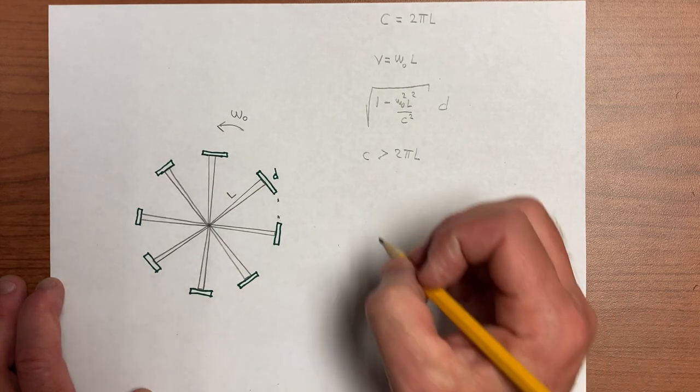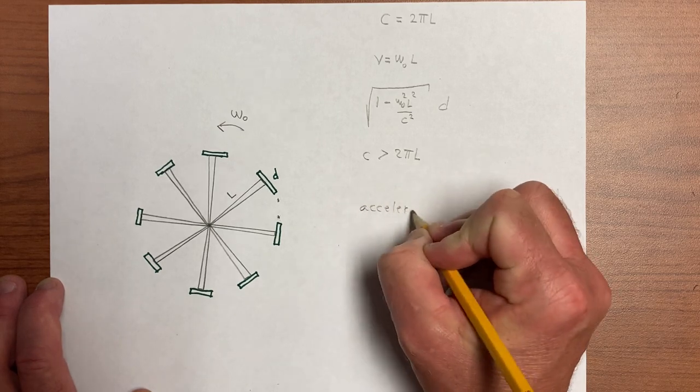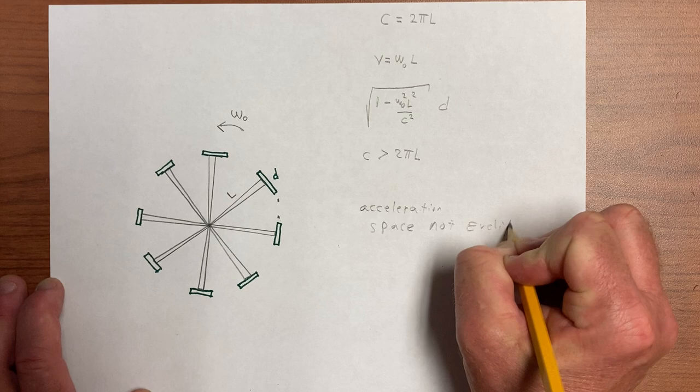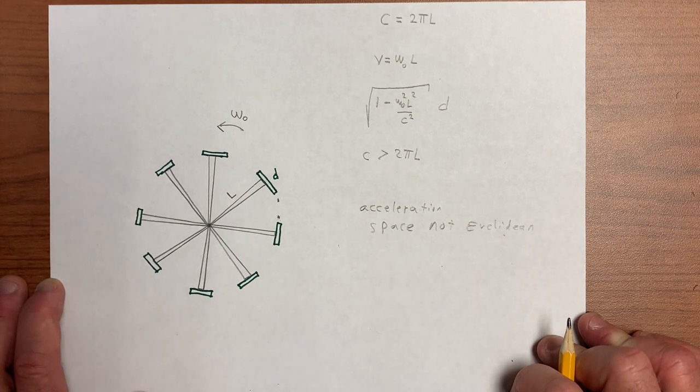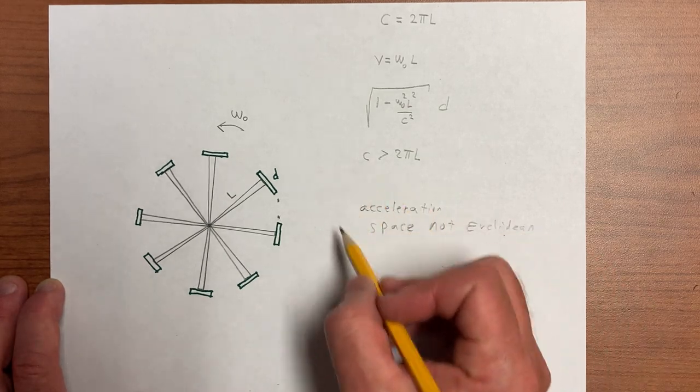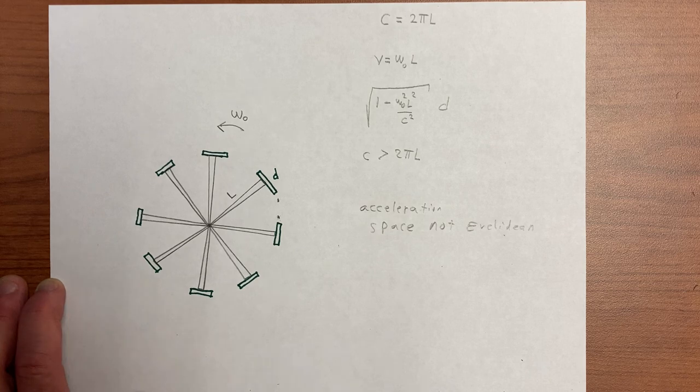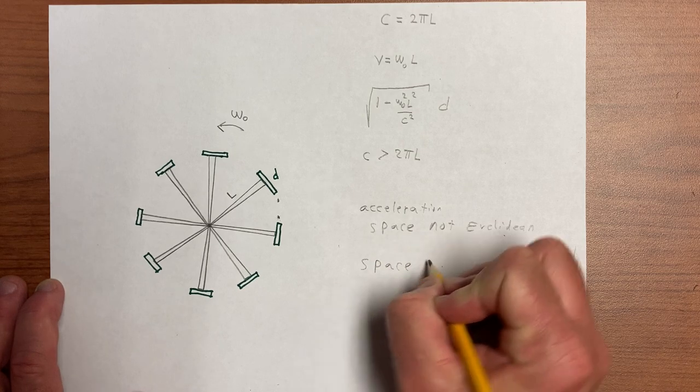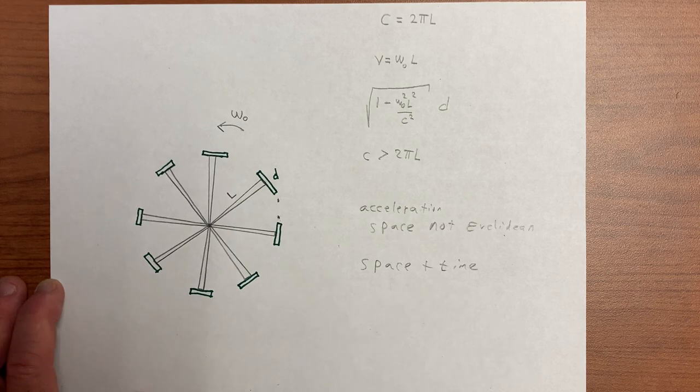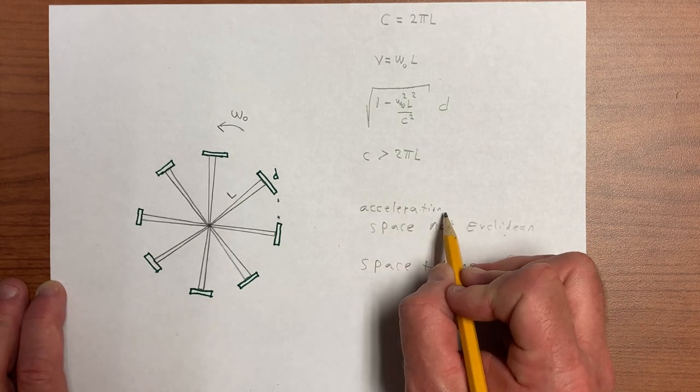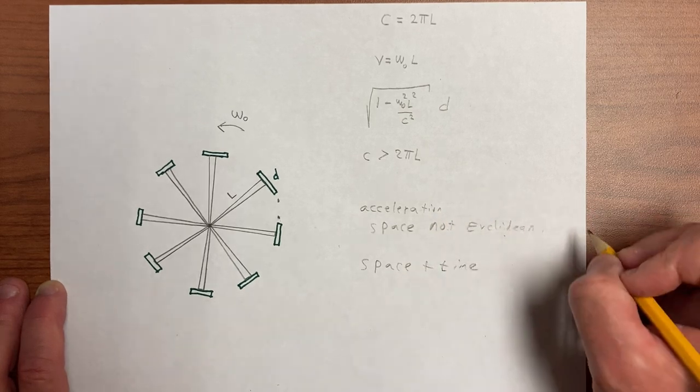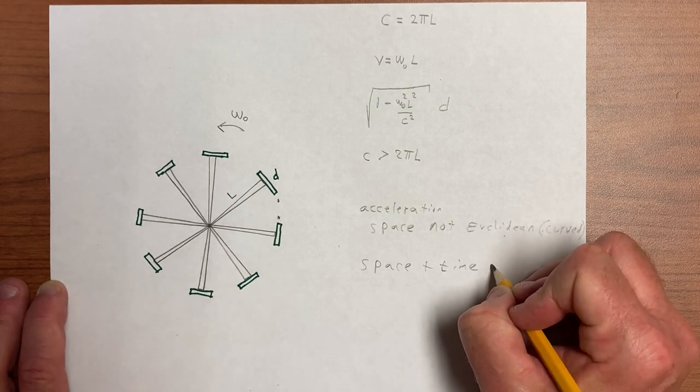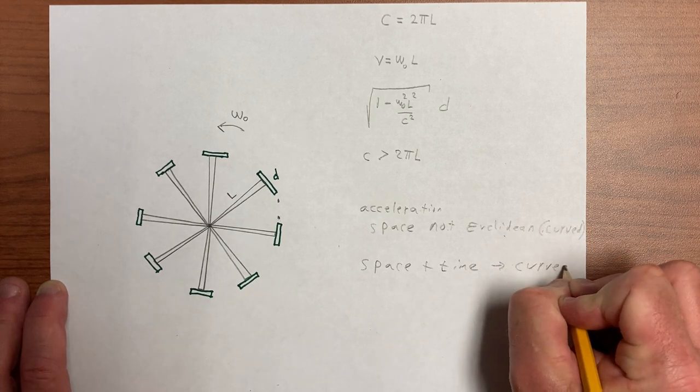Space is not Euclidean. So when we have acceleration, we seem to be concluding that space is not Euclidean, and so it's not really a paradox. It's just in an accelerated frame, we have this conclusion. And of course, we know that space and time are subject to constraints. And so if we say that in an accelerated frame, space is not Euclidean, or space is curved, then we're going to conclude that in an accelerated frame, it's space and time that are curved.